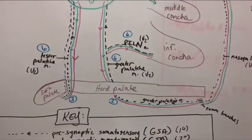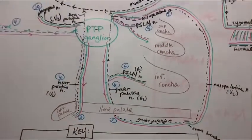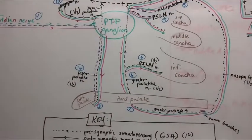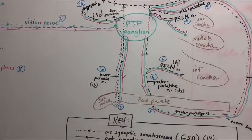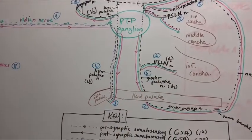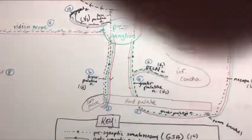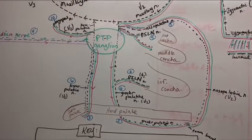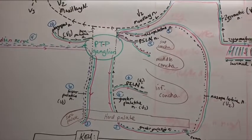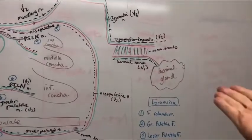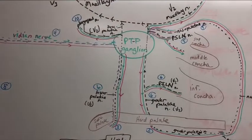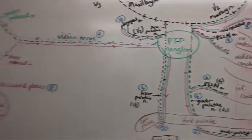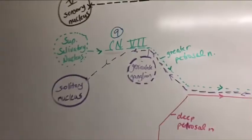Now coming back to the hard and soft palate, we see there are autonomics - solid lines. All of the nasal cavity, hard palate, soft palate mucosa, and the lacrimal gland get their autonomics from two places. Let's do parasympathetics first - that's the green dotted line.